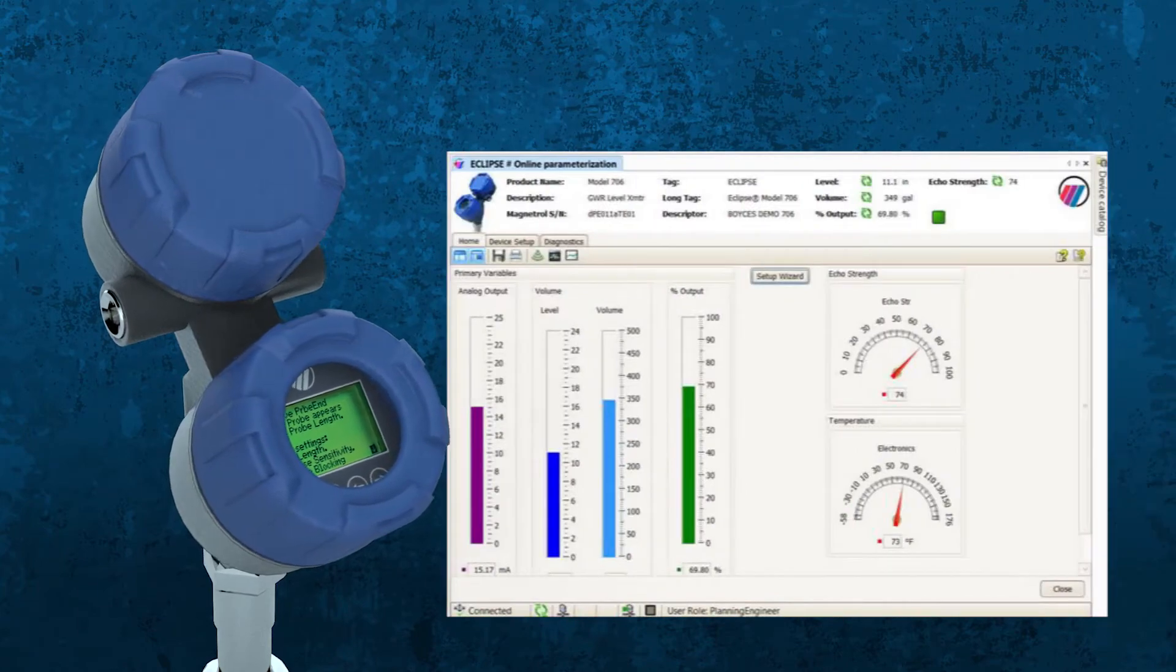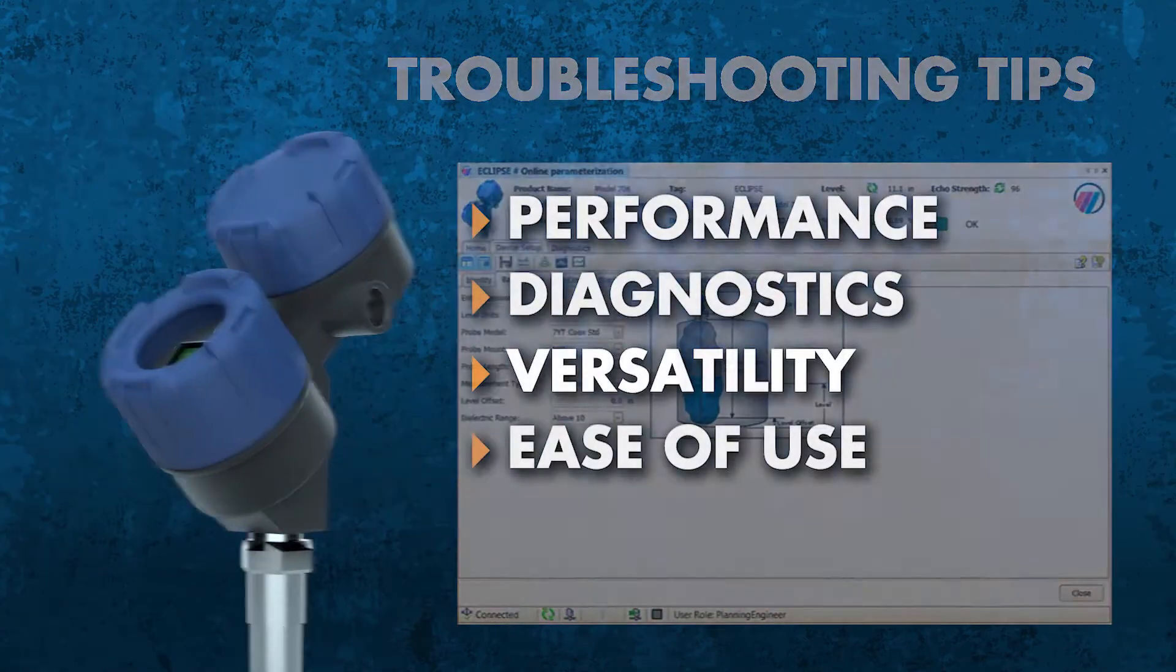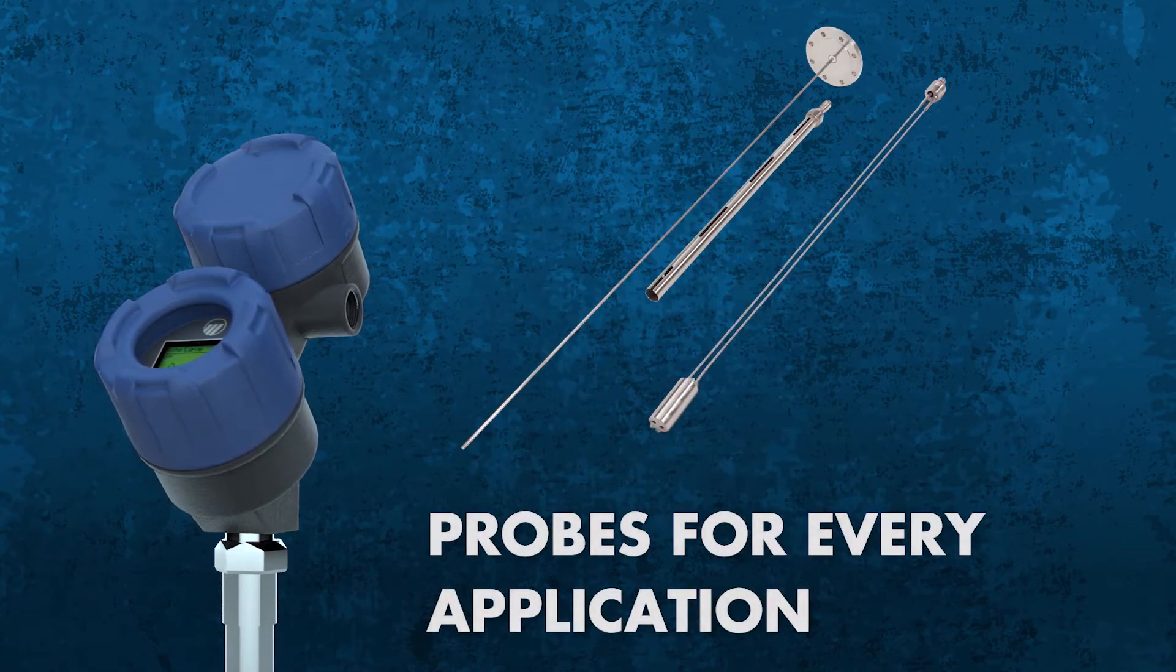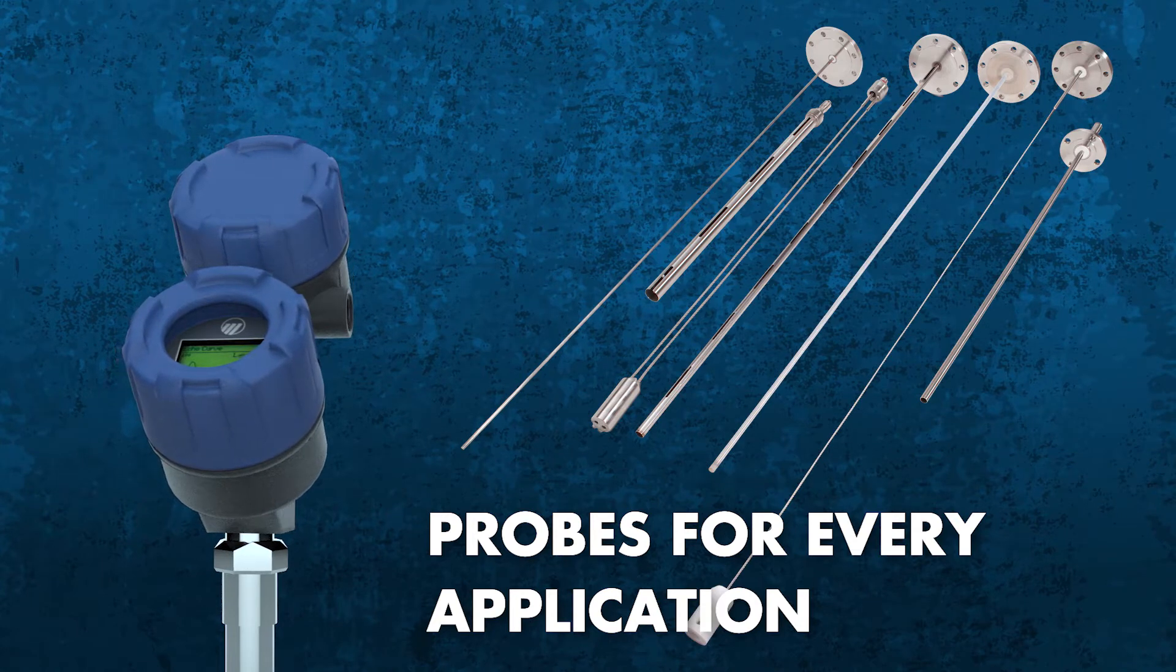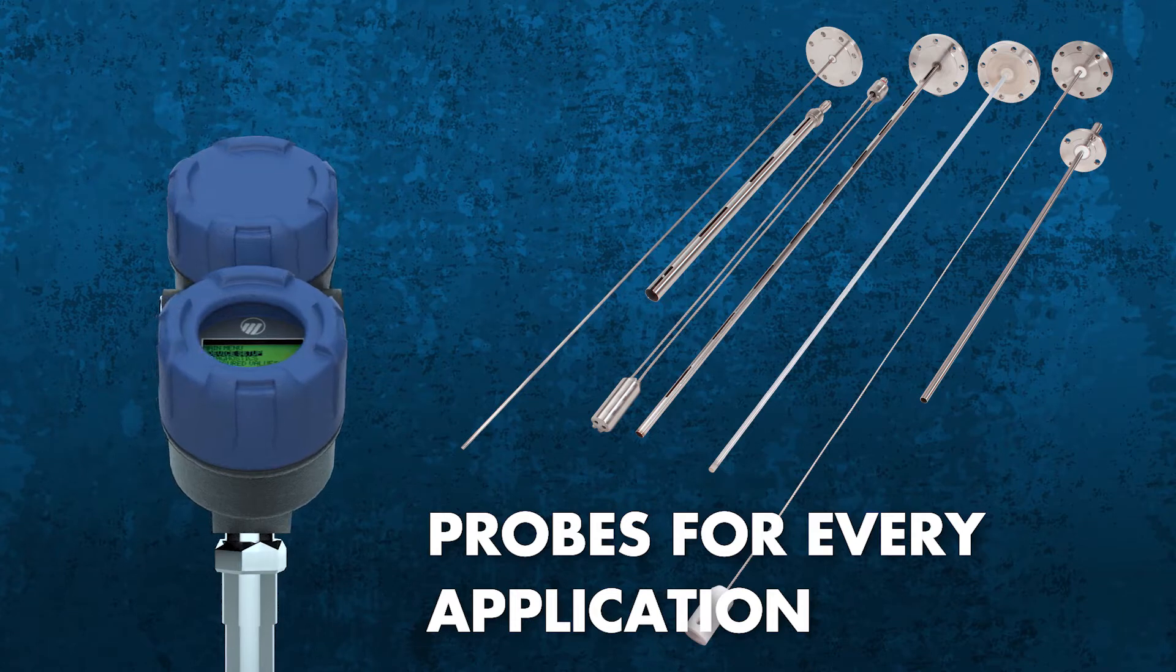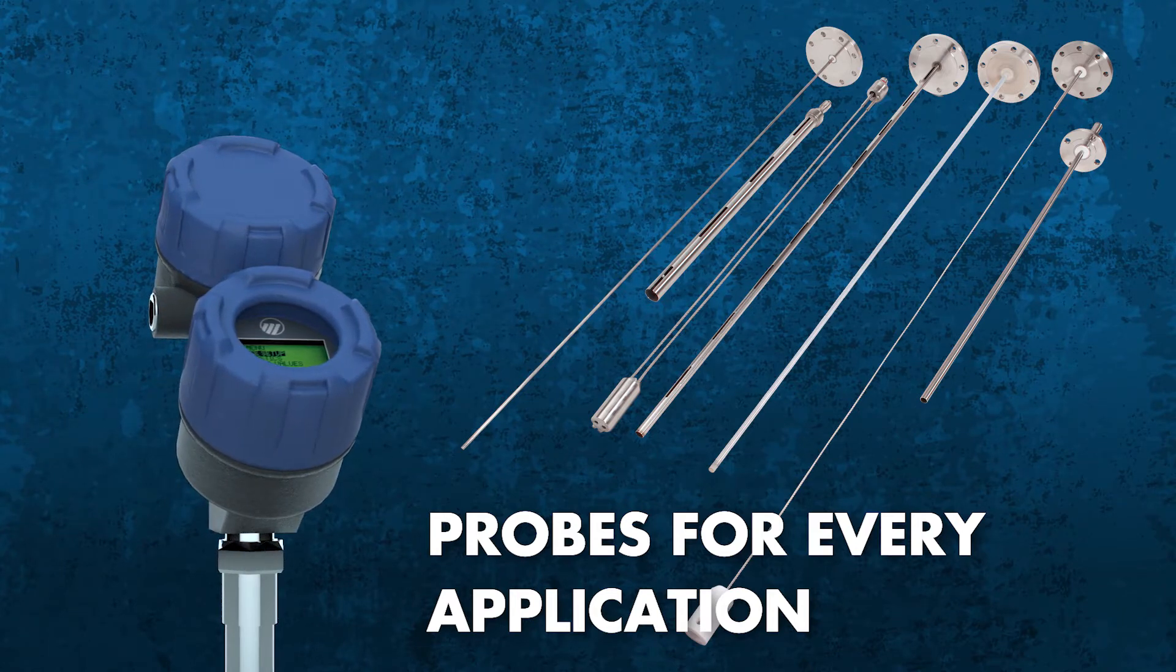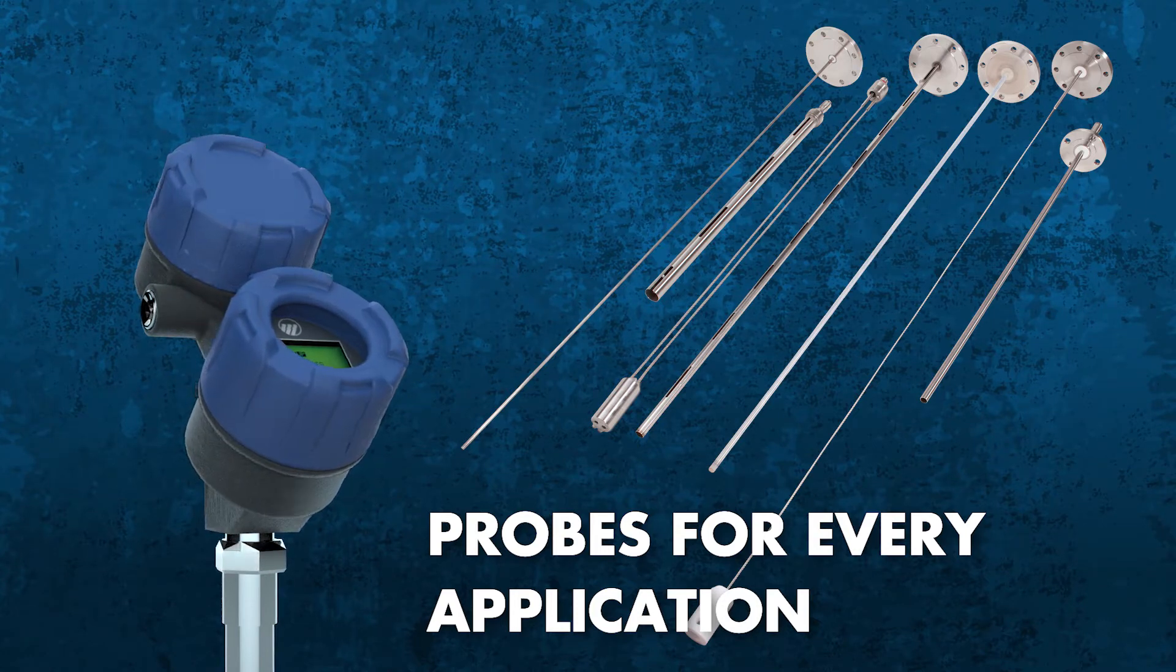The Model 706 also redefined versatility. It offers probe configurations for every application, so it can go from short to tall tanks, from dirty applications to hygienic installations, from cryogenic to 450 degrees Celsius or 850 degrees Fahrenheit, and from full vacuum to 431 bar or 6,250 psi.